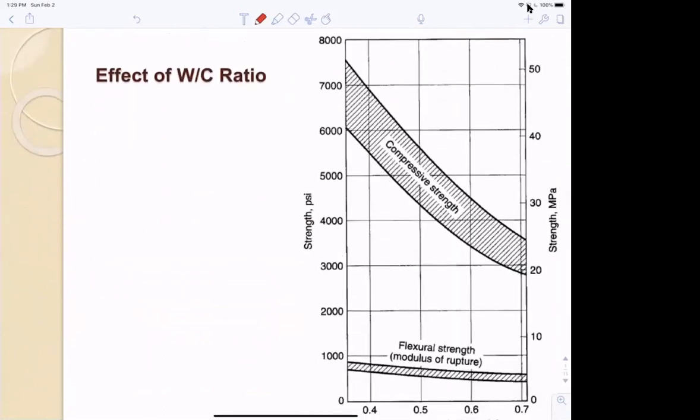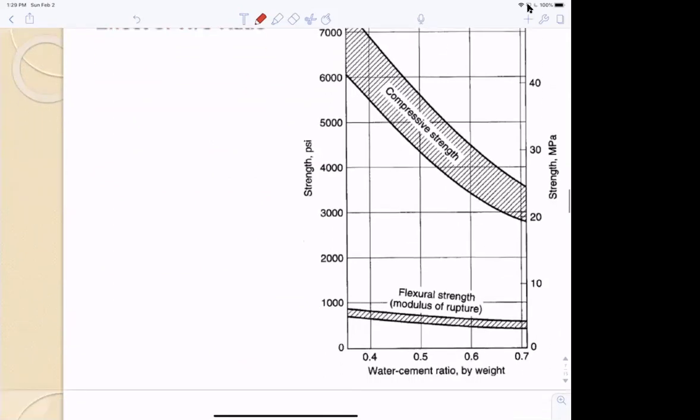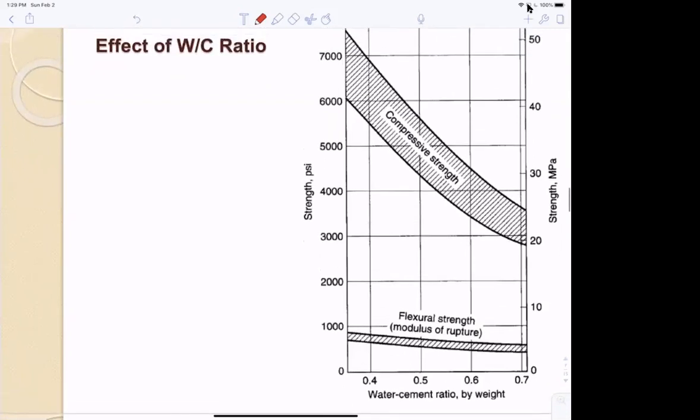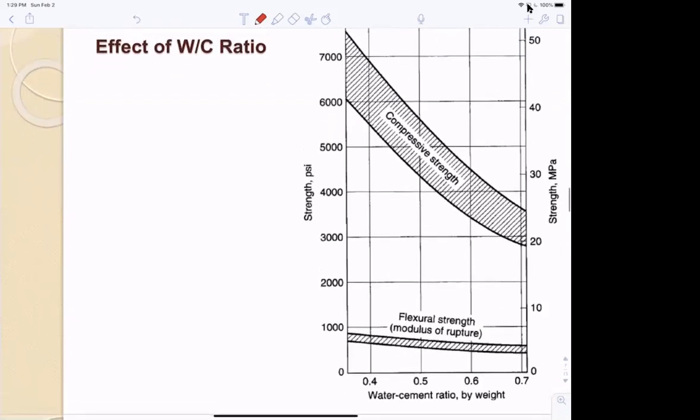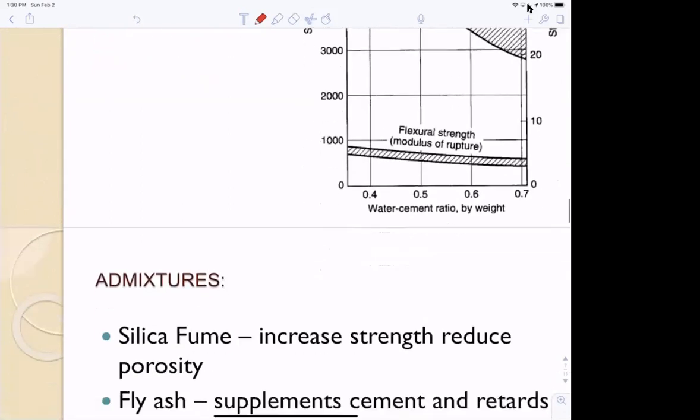The effect of water-cement ratio: the lower the amount of water to cement by weight, the higher the strength for both modulus of rupture and compressive strength. We actually did this experiment in CE 3210 last semester, fall 2019. I should plot our results and see if they come within this range.